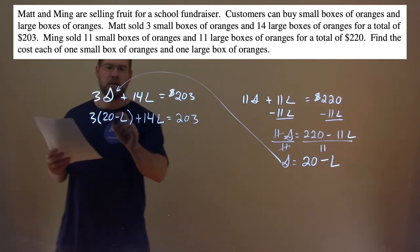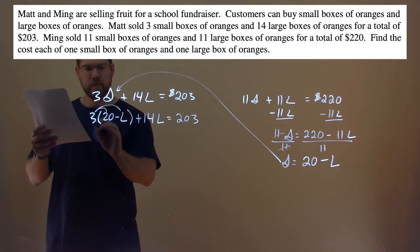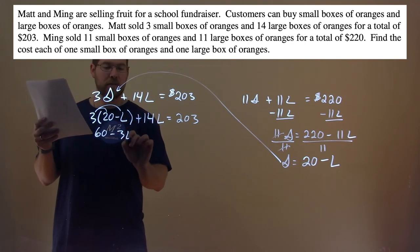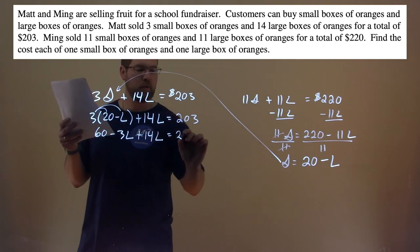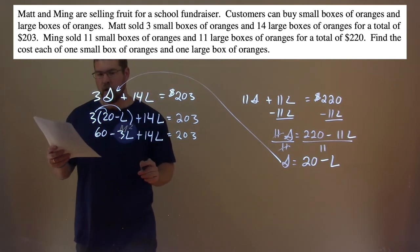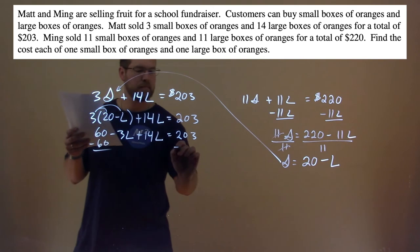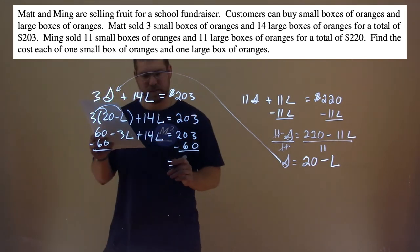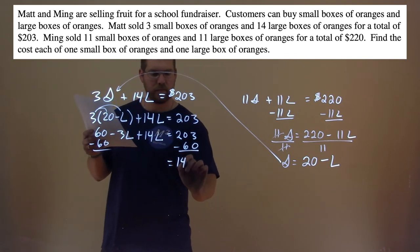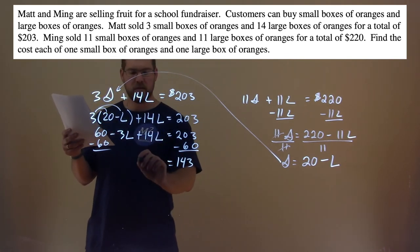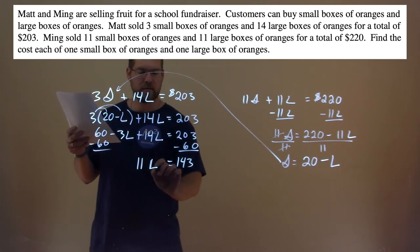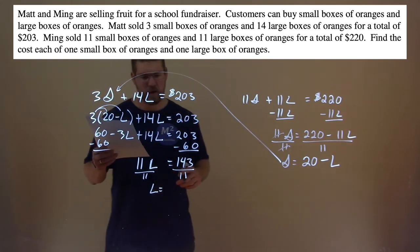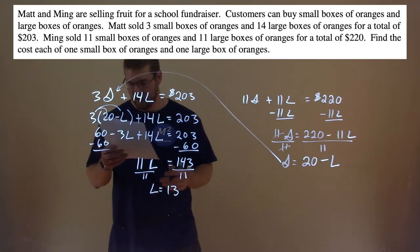Distribute the 3: 60 minus 3L plus 14L equals 203. Subtract 60 from both sides: 203 minus 60 is 143, and negative 3L plus 14L is 11L. Divide both sides by 11, and L equals 13. The large box of oranges costs $13.